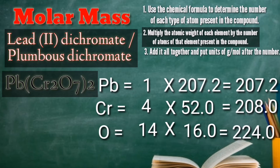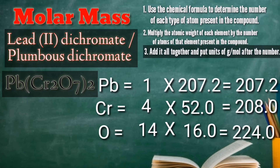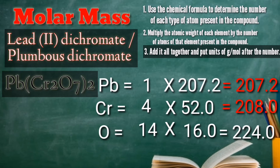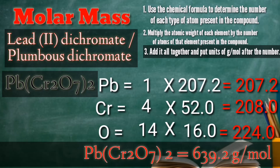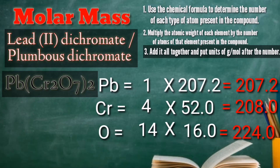After that, rule number three: add it all together and put units of grams per mole after the number. Therefore, 207.2 plus 208.0 plus 224.0 gives us the molar mass of lead(II) dichromate, or plumbous dichromate, which is 639.2 grams per mole.